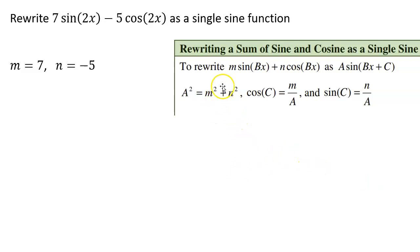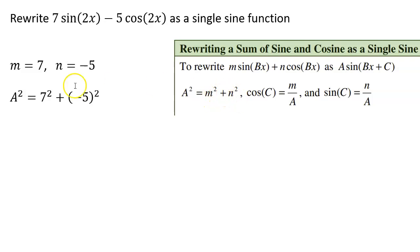From there, we can find a, the amplitude of our new sine function. We use the formula a squared equals m squared plus n squared. Taking the square root gives us a equals the square root of 74.